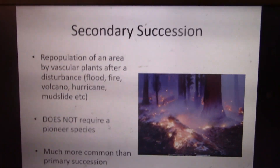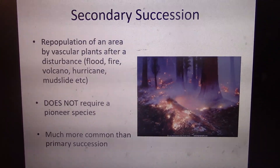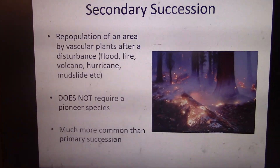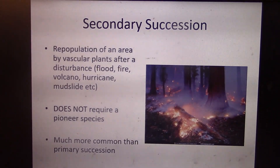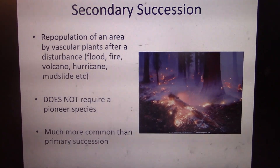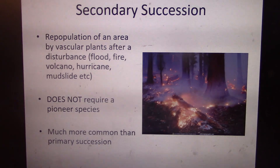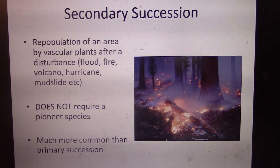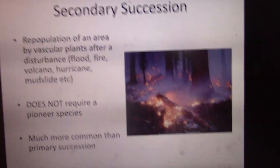Secondary succession is the most common type — there's already a soil layer, a disturbance happens, and the plant community grows back. Fire is a disturbance and a natural part of an ecosystem. Our forest fires are considerably stronger than they used to be because of fire suppression and climate change. After a disturbance, these natural purging events allow the ecosystem to rebuild as pollinated plant species recolonize.